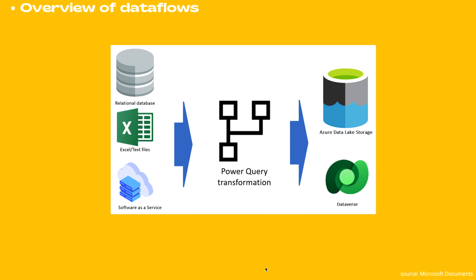Data flow features are mostly common across all products they are featured in, but some product-specific features might exist in data flows created in one product versus another. Now let's see how this actually works.